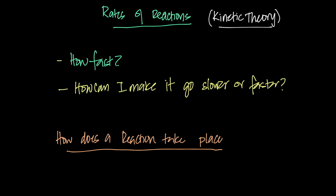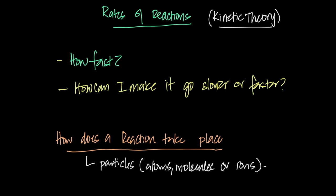At the atomic level — the kinetic level — how do reactions happen? Reactions happen when particles touch particles. When I use the word 'particles' in this chapter, understand that I mean either atoms, molecules, or ions, because in some cases ions react with each other, atoms react with each other, atoms react with molecules, or ions react with molecules. It's either of these three types of particles that react.